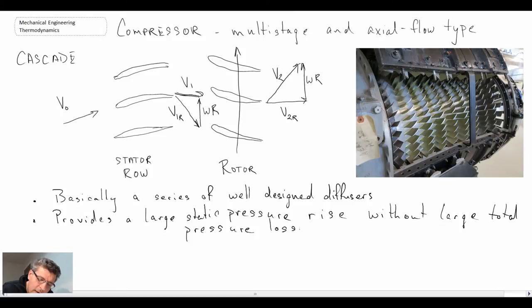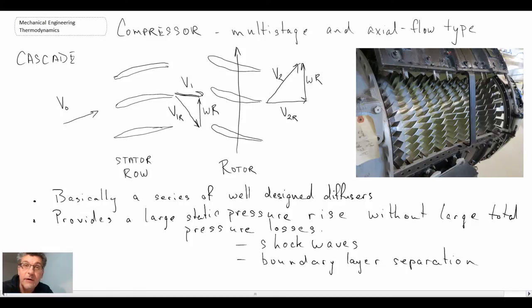So it's providing a large static pressure rise without large total pressure losses. Where could you get large total pressure losses? It could be from things such as shock waves, and it could also be due to boundary layer separation. You do not want to have separated flow—that's where the boundary layer detaches from your airfoil within the compressor cascade. Those will result in pressure losses we want to avoid. That is the compressor.